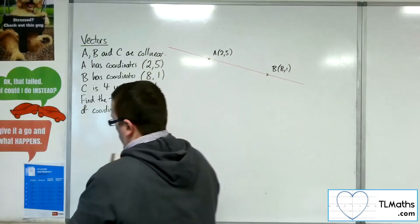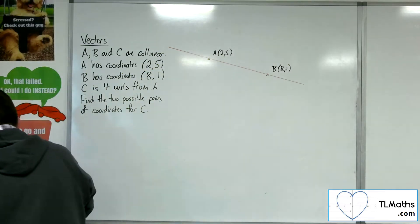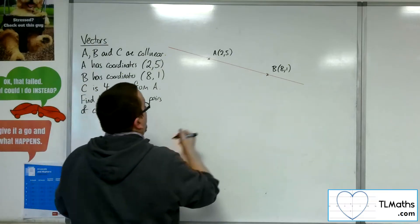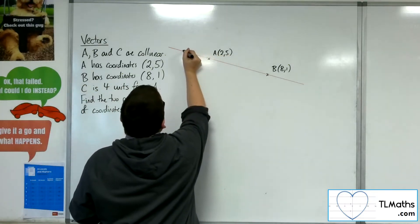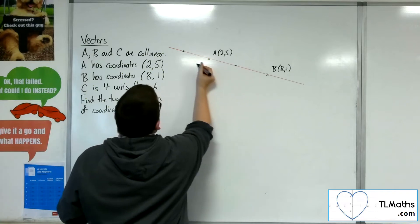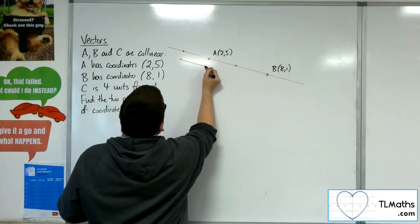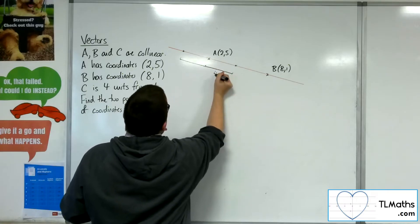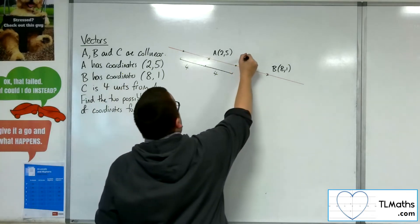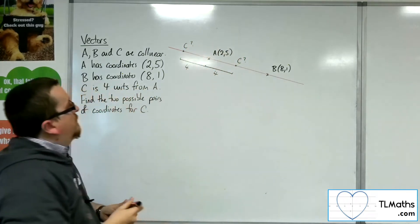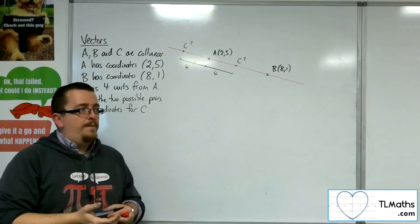C lies somewhere on this line. So it might be here or it could be here. But what I do know is that that distance in each case is four units. So C could be here or C could be here. That's the idea.